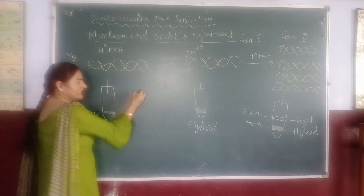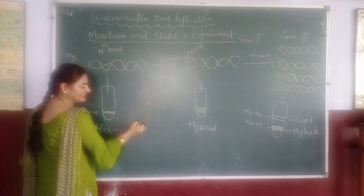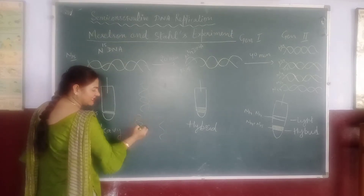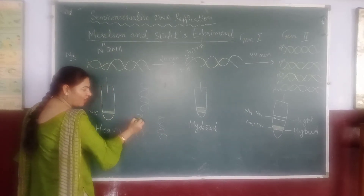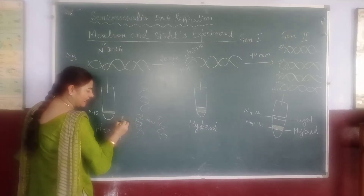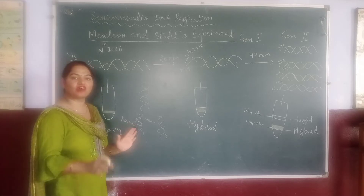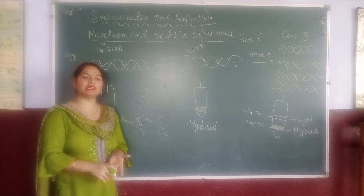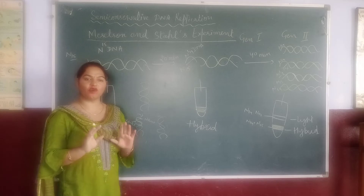This is our double-stranded DNA. There are two parental strands. New strands are synthesized — half of the parental and half of the new. The parental character is conserved. This is the semi-conservative mode of replication. The original DNA was conserved.